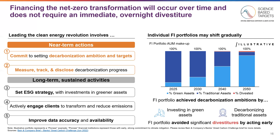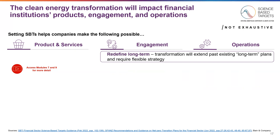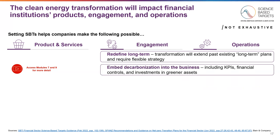This does not imply that any of this will be easy. However, companies that act early have an opportunity to play a major role in transforming the energy economy. There are several activities financial institutions must consider in order to play an active role in the clean energy transformation. Setting a science-based target can help companies transform their products and services, engagement activities, and operations — giving a sense of direction throughout their companies. Decarbonization will require long-term planning and strategies that can adapt over time. A company must also embed decarbonization into the business to drive change, including in key KPIs, financial controls, and investment activities.